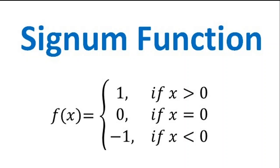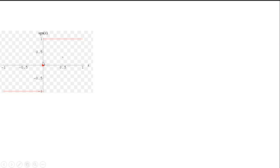In this video we are going to show how to plot a step function from the signum function. The signum function is a sign function: for x greater than zero the value of the signum function is one, for x equal to zero it is zero, and for x less than zero it is minus one.